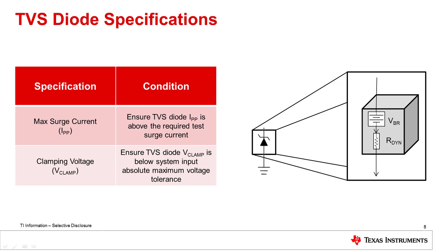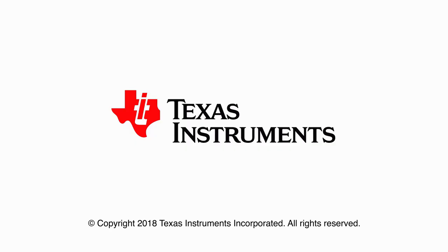It's important to understand these limitations and select TVS diodes that will robustly protect a system as pulse energy increases. Properly selected peak pulse current and clamping voltage are what make a surge protection stage robust. Even with these limitations understood, there are a few other commonly made mistakes, which we will discuss in the next video in this series. Thank you for watching.